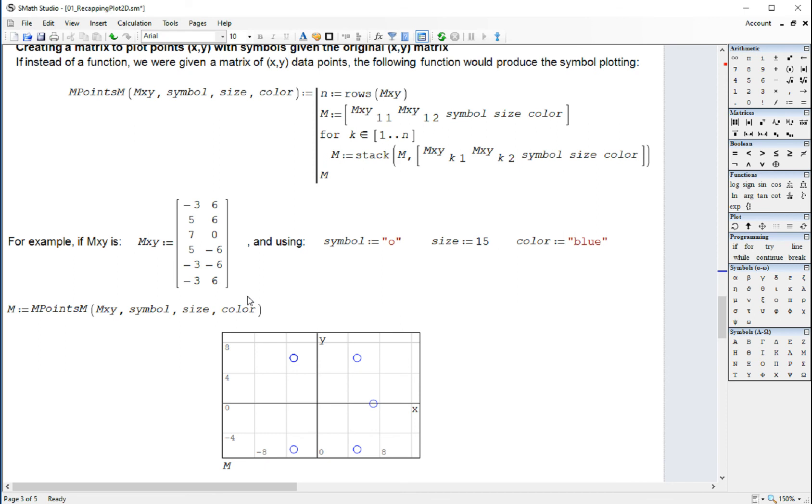And all we're going to be doing is transforming the matrix of points into a matrix of symbols with colors and so on. For example, you have a matrix of point MXY. The symbol will be a circle, size 15, color blue.